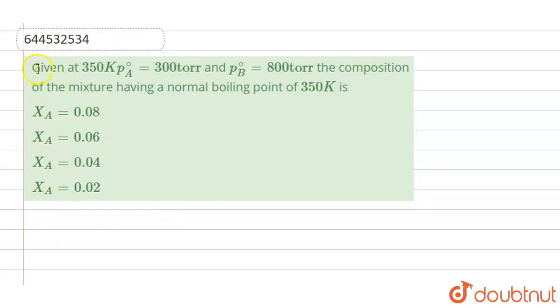The question is: given at 350 Kelvin, P⁰_A is 300 torr and P⁰_B is 800 torr, find the composition of the mixture having a normal boiling point of 350 Kelvin.